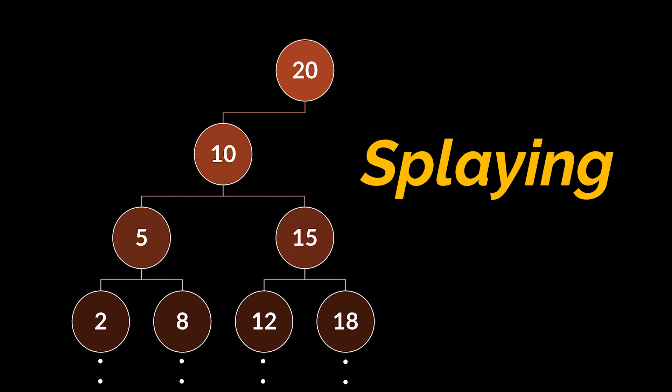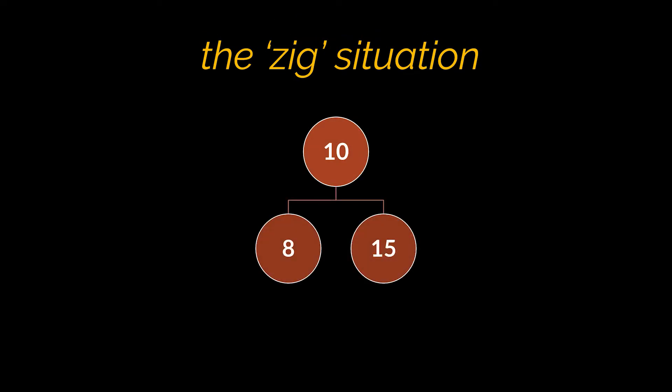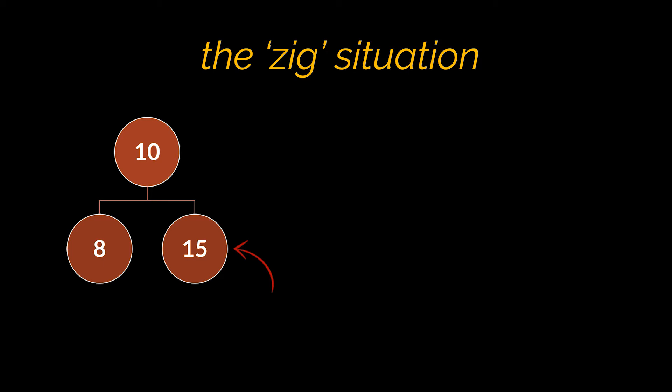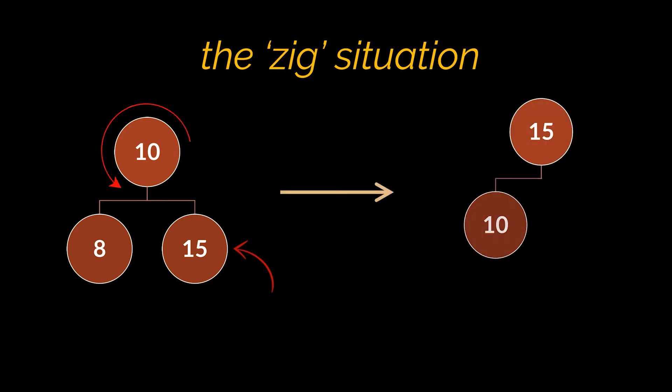Our ultimate goal is to bring a certain node to the root. So if the node we want to place at the root is one of the root's children, we have to apply a left or right rotation on the root depending on whether the node is the right or left child respectively. For example, if element 15 is the element we want to move to the root, we apply a left rotation on node 10, and node 15 becomes the root.